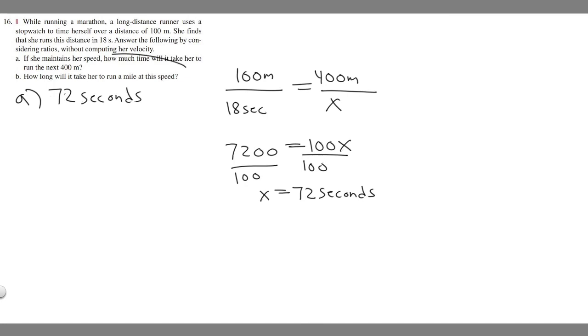Now let's do B. So B is how long will it take her to run a mile at this speed. You want to start with the same ratio, so 100 meters for every 18 seconds. But instead, we're saying she's going to run a mile.